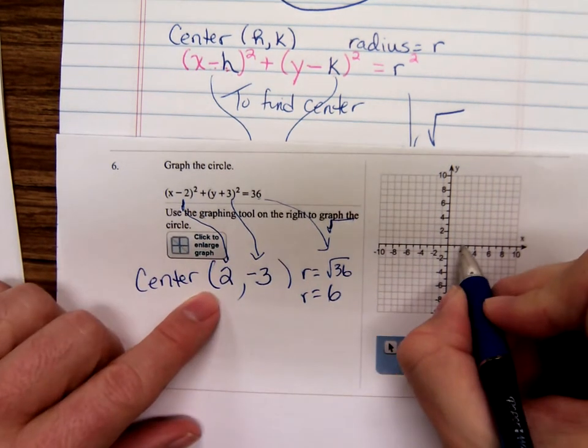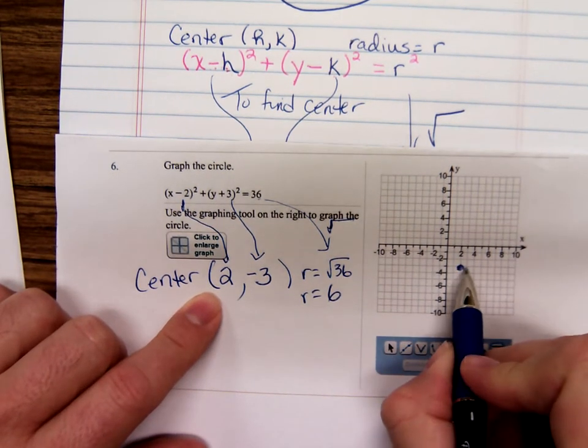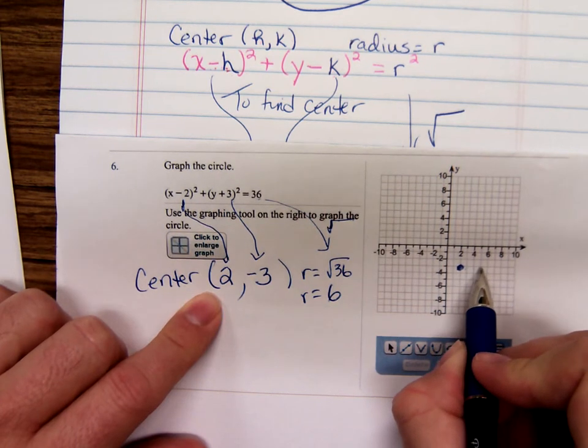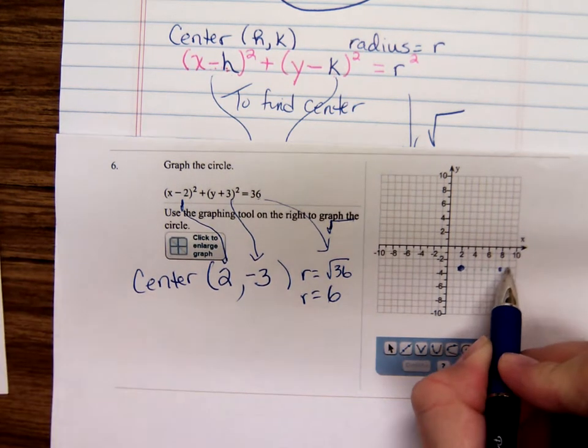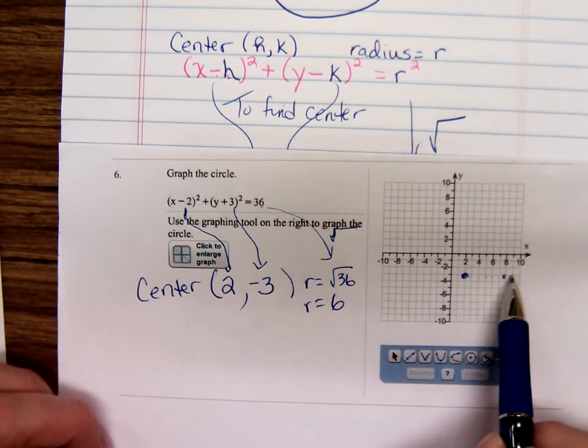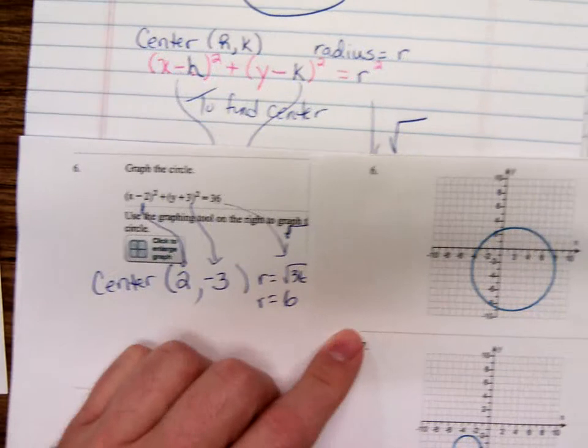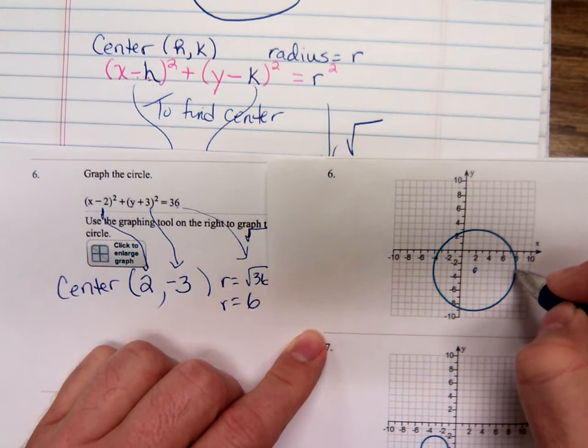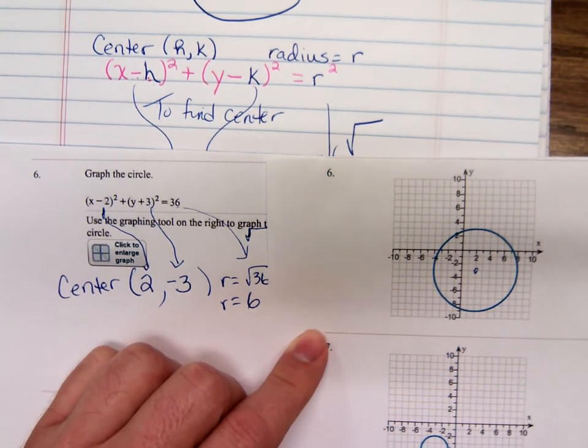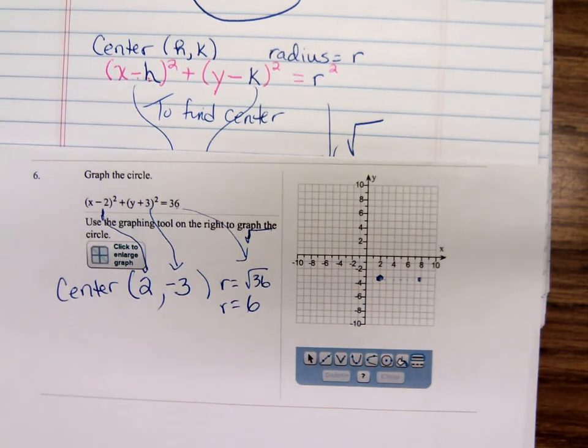Graph it, you go right 2, down 3, and then you move over 6 units. That's 1, 2, 3, 4, 5, 6. And when you move over like that, it's going to be drawing the circle for you. So the graph will look something like that right there. Right 2, down 3, move over 6, and it'll show the circle. It's a very nice graphing tool that we have here. Again, I hope I have another video. The next video should be me using that graphing tool.